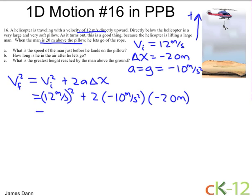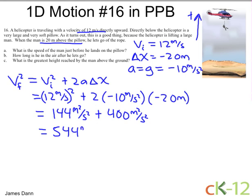Squaring things out, we get 144 meters per second squared plus 2 times 10 times 20, which is 400. The units are meters times meters, making it meters squared over seconds squared. Same units — we can add the numbers and we get 544 meters squared per second squared.